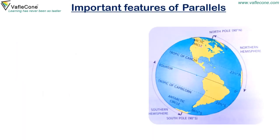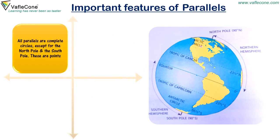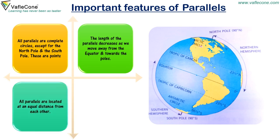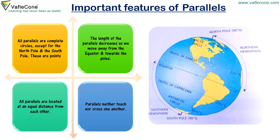Important features of parallels. All parallels are complete circles except for the north pole and the south pole, which are points. The length of the parallels decreases as we move away from the equator and towards the poles. All parallels are located at an equal distance from each other. Parallels neither touch nor cross one another.